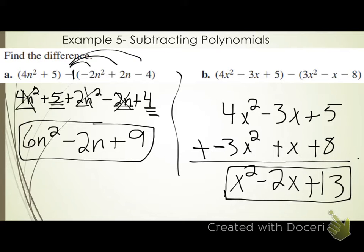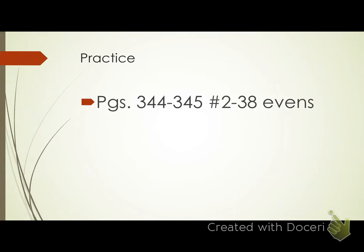Are there any questions about anything we've covered today — monomials, degree of a monomial, polynomials, binomials, trinomials, degree of a polynomial, standard form, leading coefficient, or addition and subtraction of polynomials? Your assignment is pages 344 through 345, numbers 2 through 38 evens. Identifying leading coefficient, degree, and writing in standard form should go quickly. Addition and subtraction will take a bit longer but should also go pretty quick.